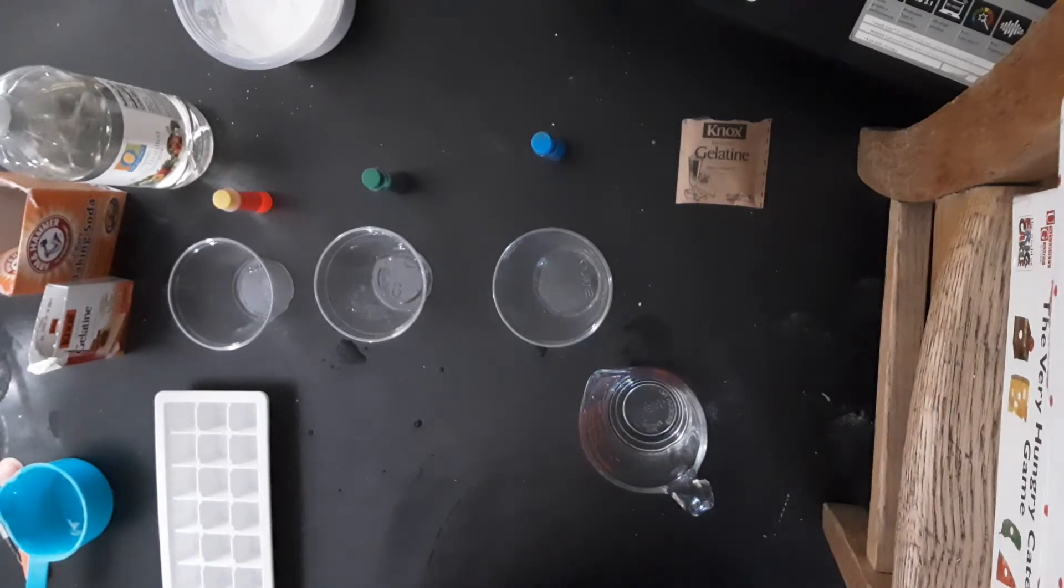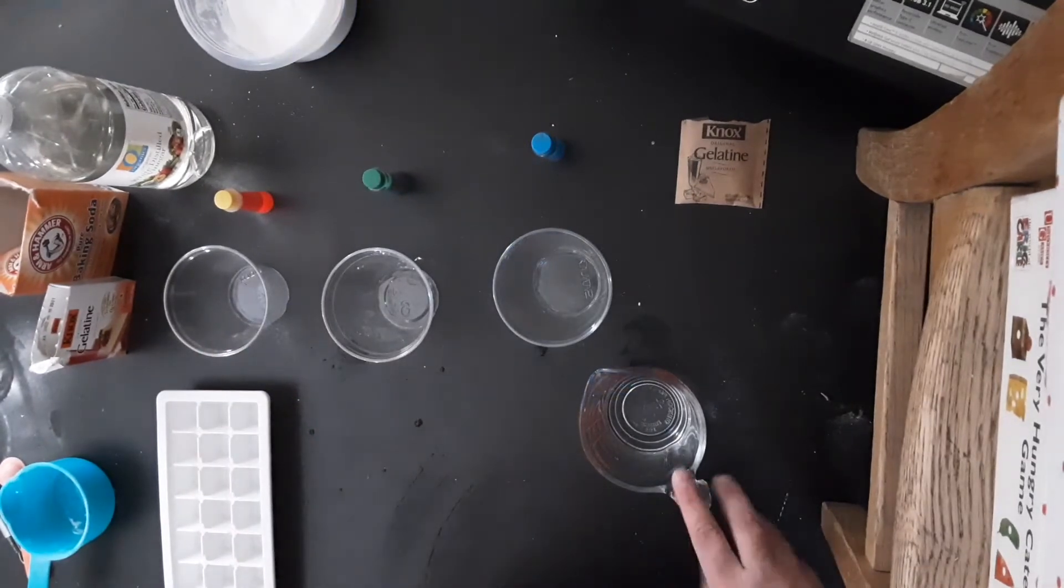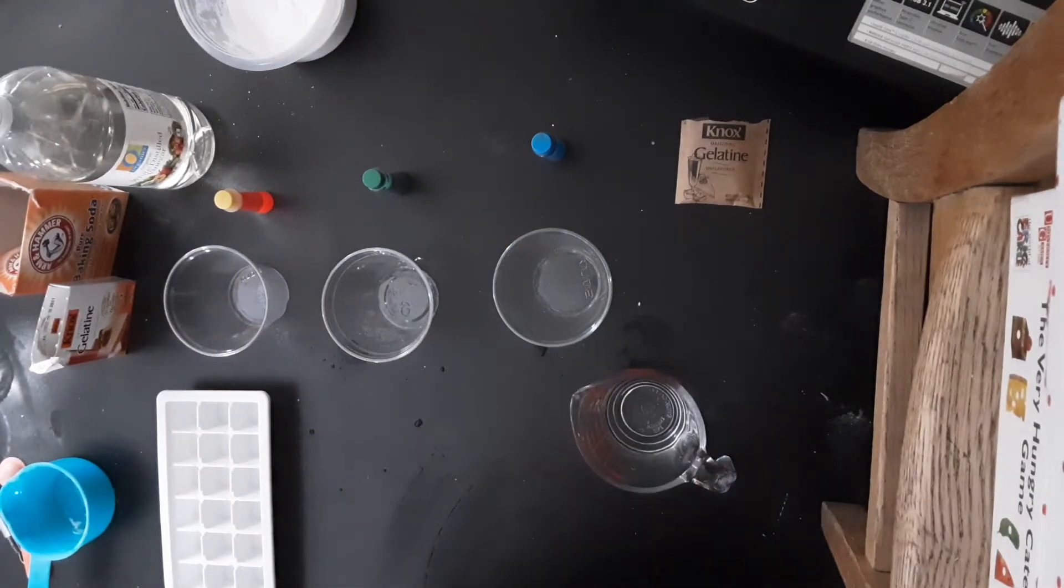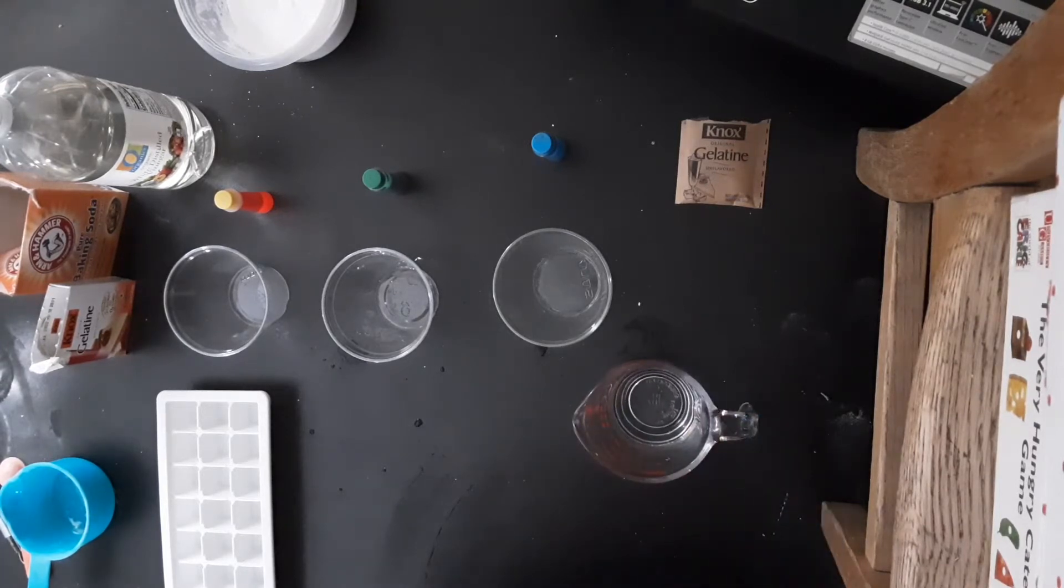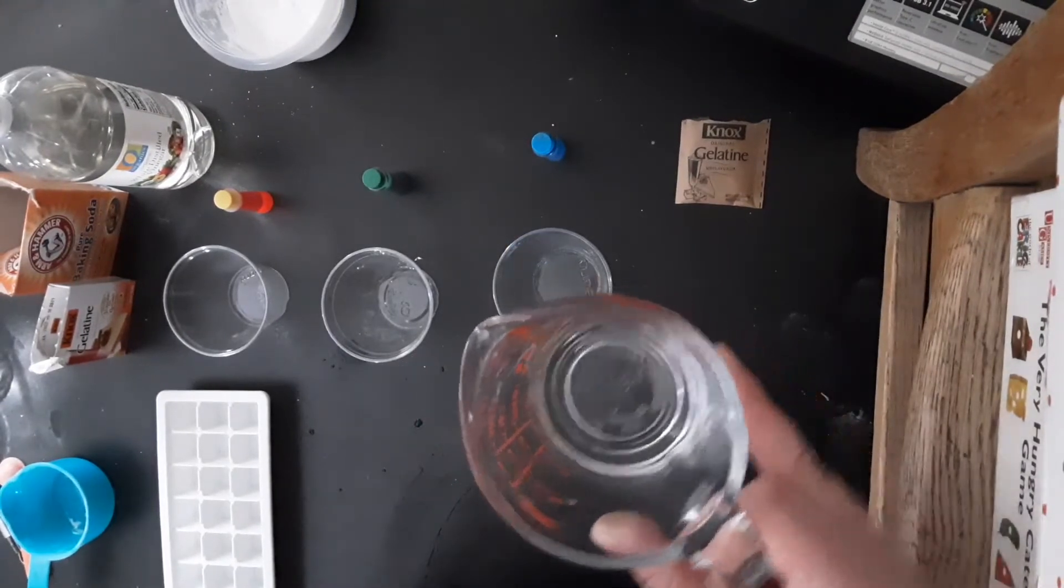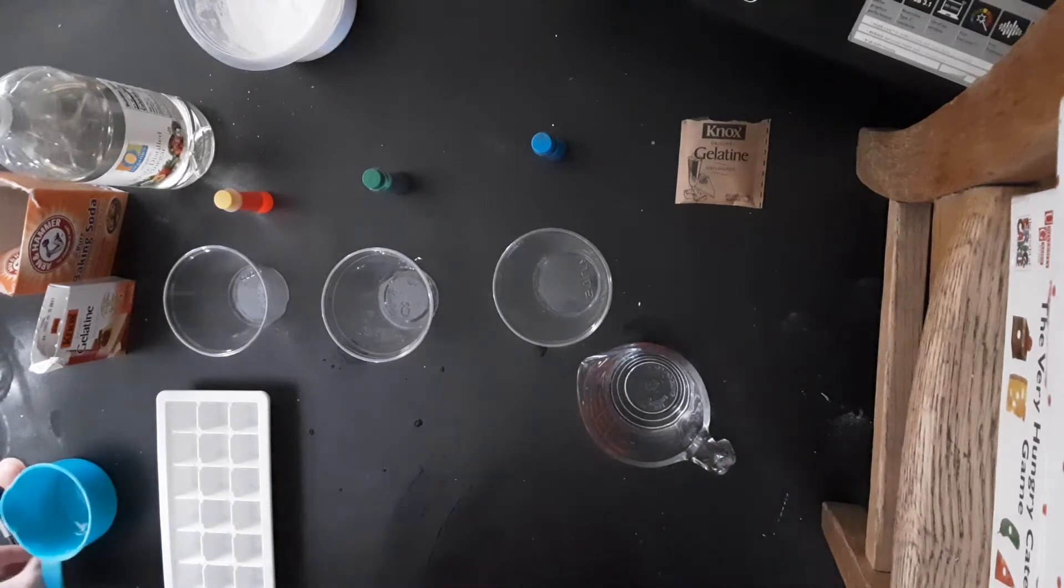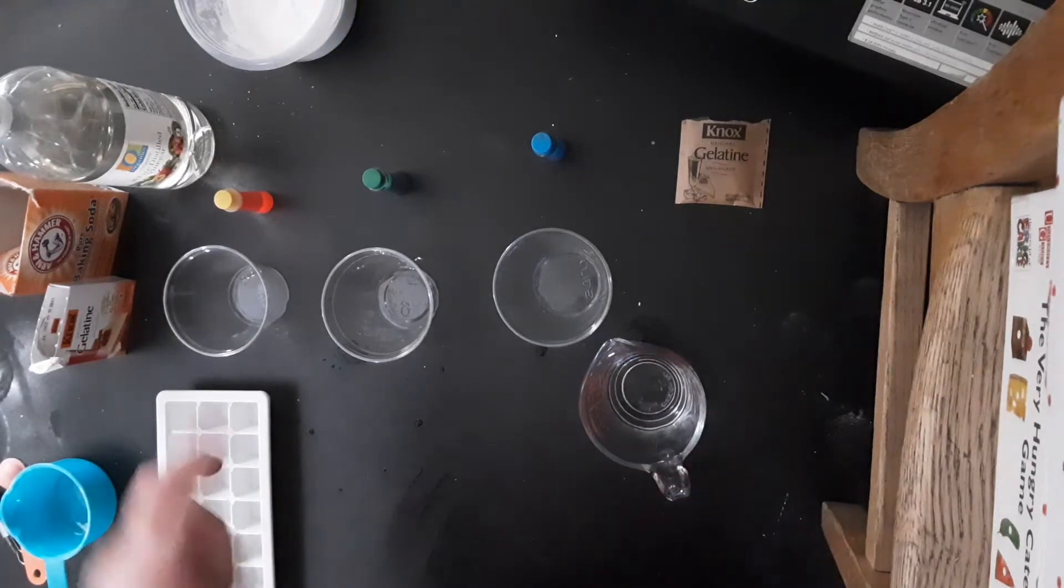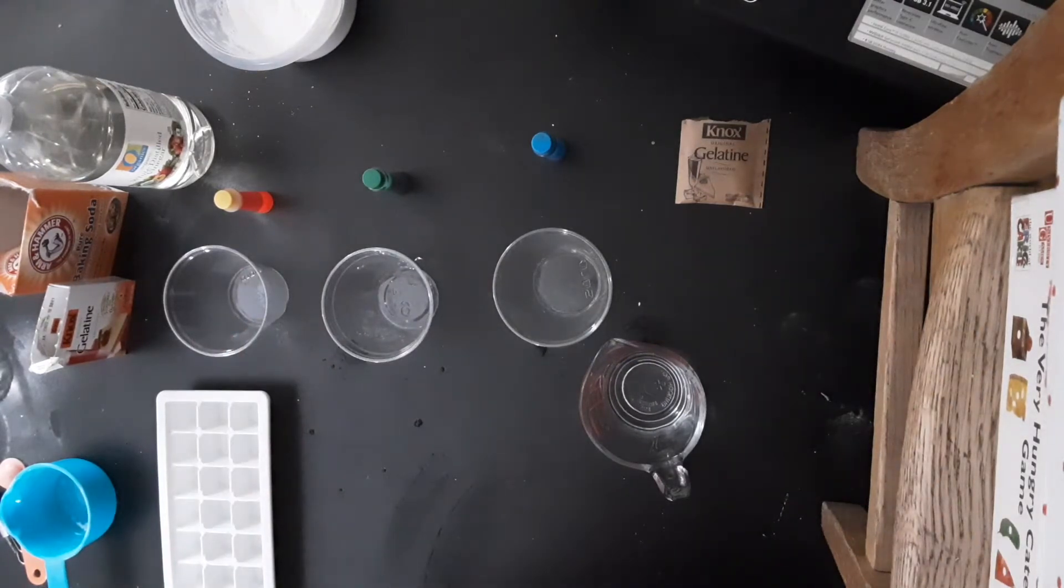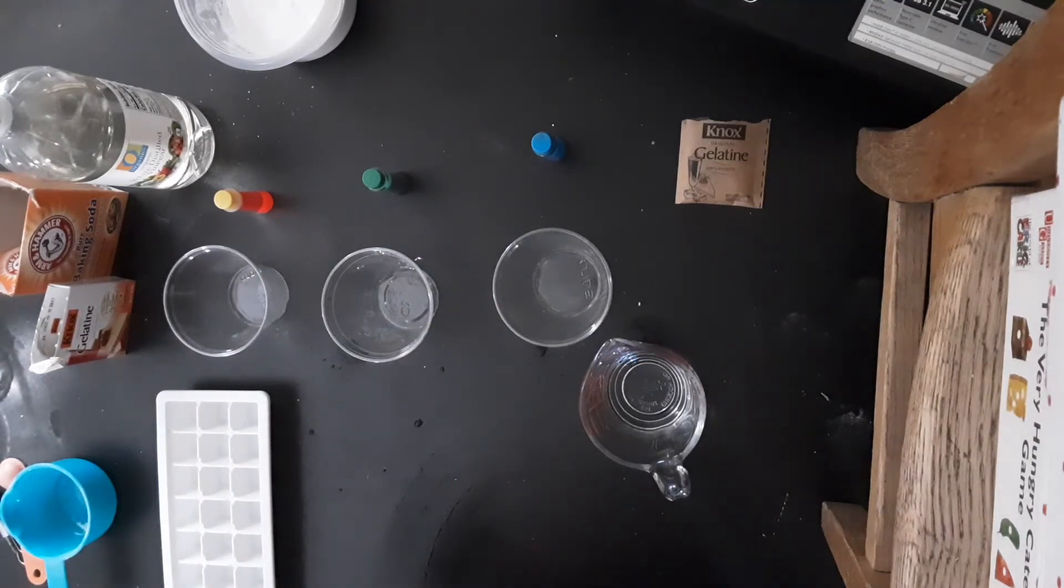So each cup needs the same amount of water. So there are 12 teaspoons of water in a quarter cup. So for three colors to get the amount of water I need I divide 12 by three. So I know I need four teaspoons of water.